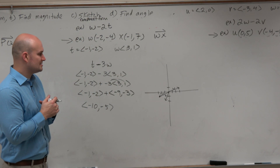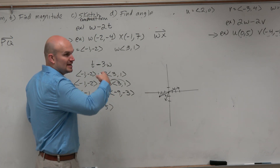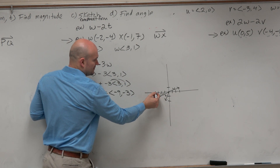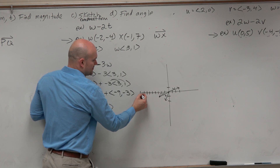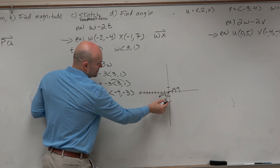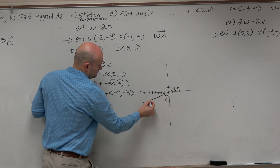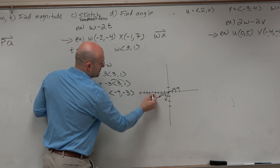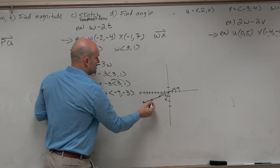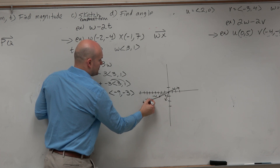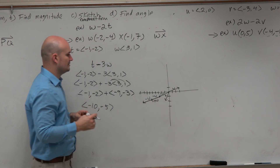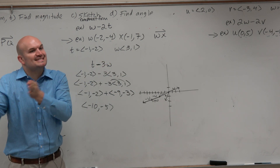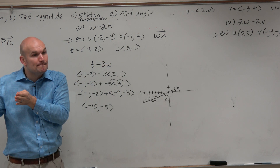And then what happens when I do it three times? That takes me to negative 9, negative 3 — so it's multiplied by 3. Going left 1 through 9, and then down 1, 2, 3. So you can see that's negative 3w — it just got tripled, like stacked one atop each other.